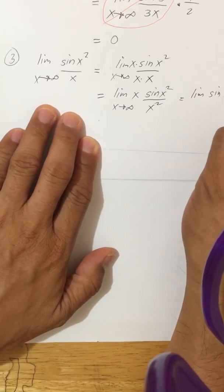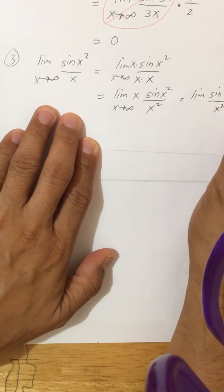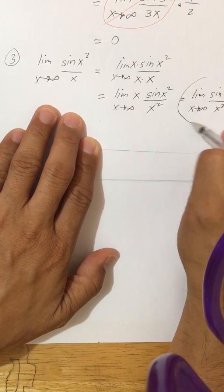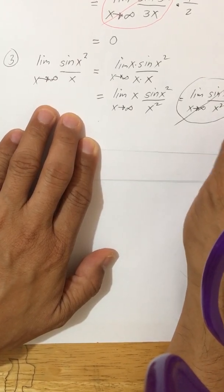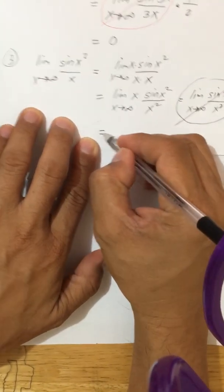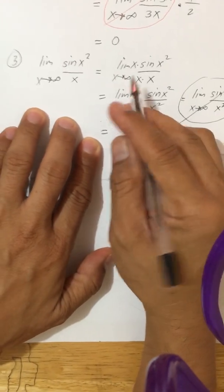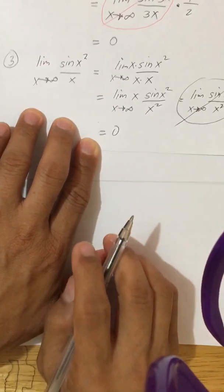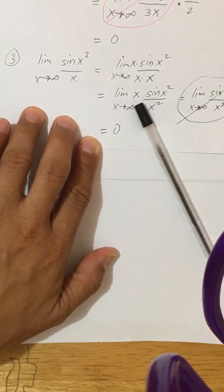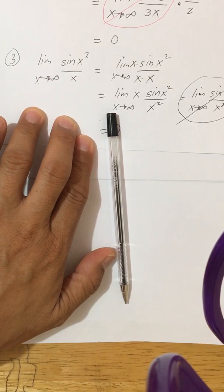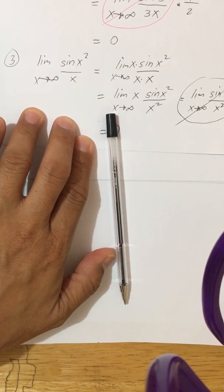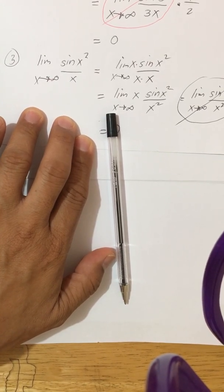We rewrite this as the limit of sine x squared over x squared, multiplied by x, as x approaches infinity. We know that the limit of sine x squared over x squared is 0, so therefore our answer is also equal to 0. That's it for this part — I hope you understand this. In the next video I will show you the exponential function. Thank you very much and have a nice day.